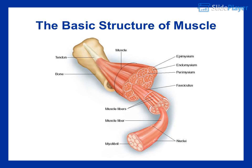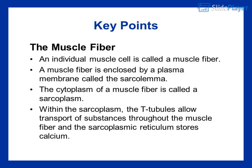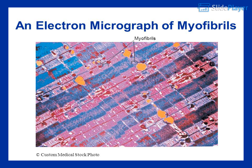The basic structure of muscle begins at the level of a single muscle fiber. An individual muscle cell is called a muscle fiber, enclosed by a plasma membrane called the sarcolemma. The cytoplasm of a muscle fiber is called the sarcoplasm. Within the sarcoplasm, T-tubules allow transport of substances throughout the muscle fiber, and the sarcoplasmic reticulum stores calcium.